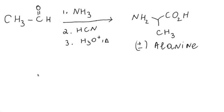His original synthesis involved acetic aldehyde. He reacted it first with ammonia, then hydrogen cyanide, followed by acidic hydrolysis at elevated temperature, and he obtained alanine. What's important to note here is that he obtained the racemic mixture of alanine.